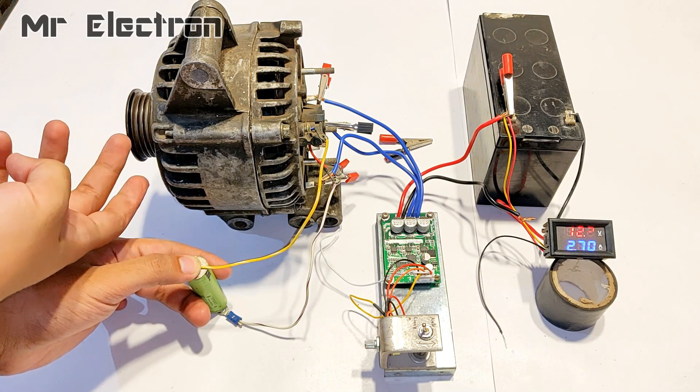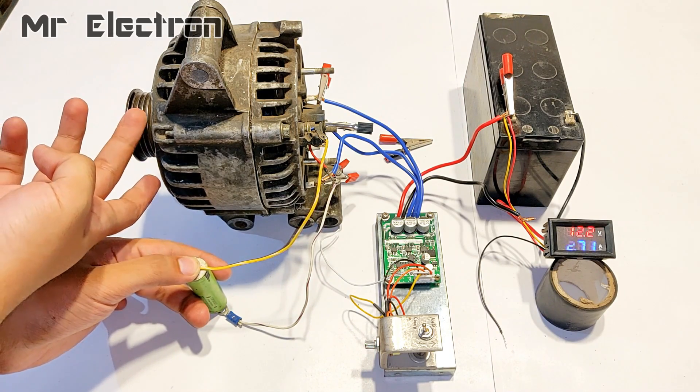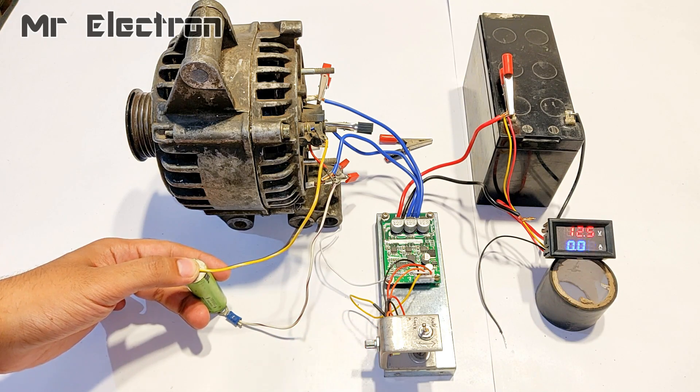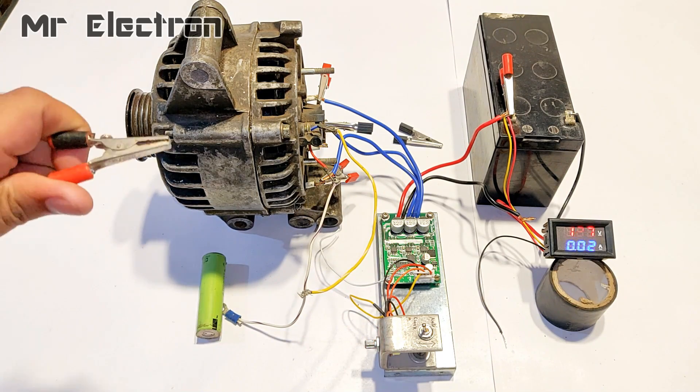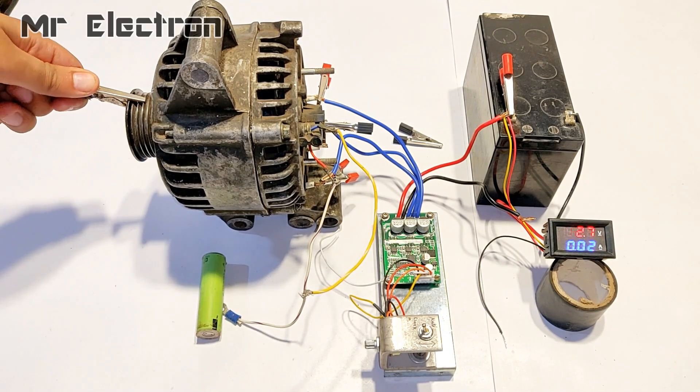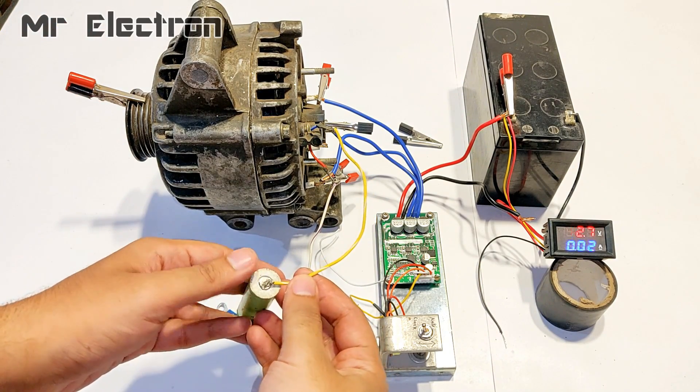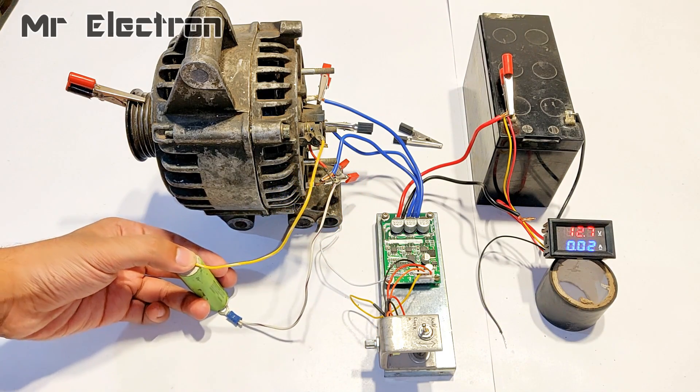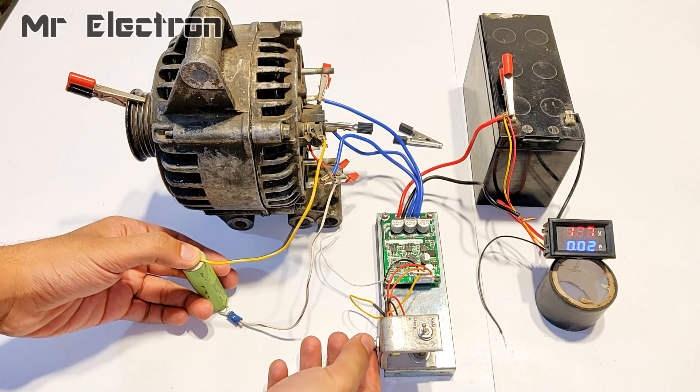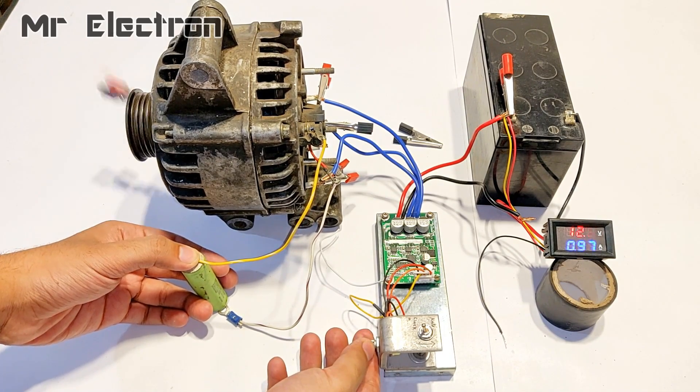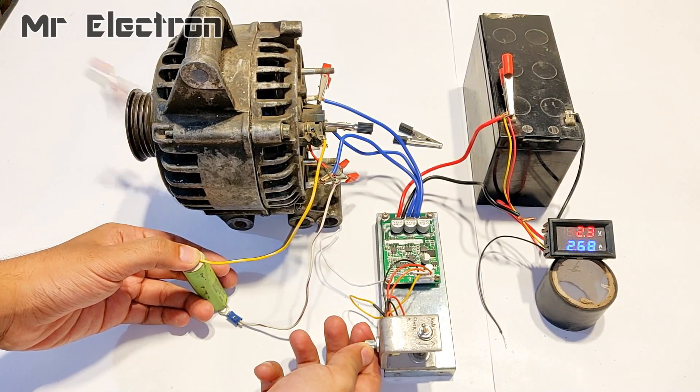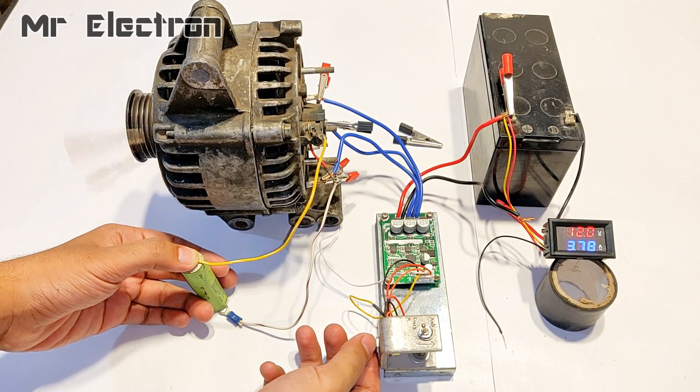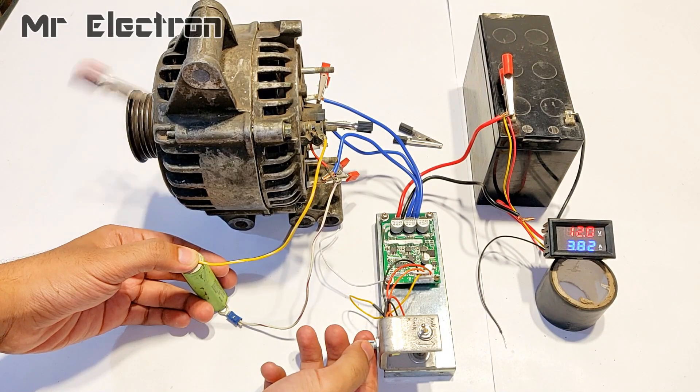The alternator has started running at a high speed and the meter is indicating 12.1 volts at 2.6 amperes. As I rotate the knob, the parameters change on the meter. Now to indicate better rotation, I have connected a clip. As it can be seen, the alternator has started running and it is drawing around 3 amperes or 4 amperes at 12 volts from the UPS battery. The speed is very high and the operation is smooth as before.